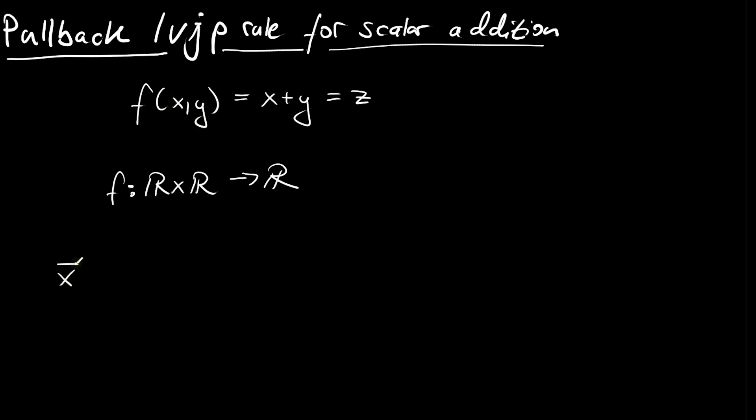We can get the cotangent on x by the rule that this is z bar times the derivative of f with respect to x. So we will get z bar multiplied, and f with respect to x is just 1, so this will just be z bar. And for y bar,